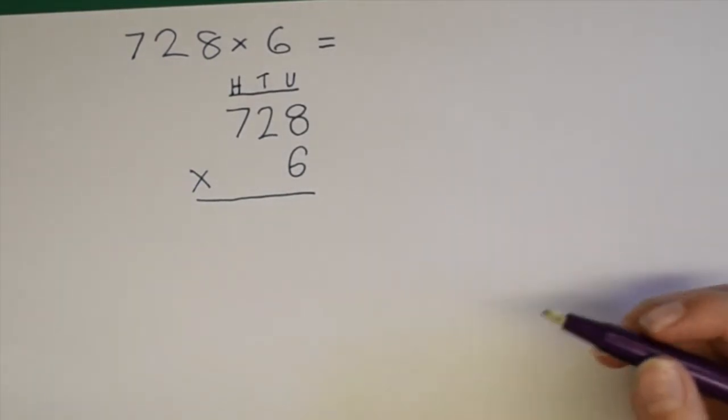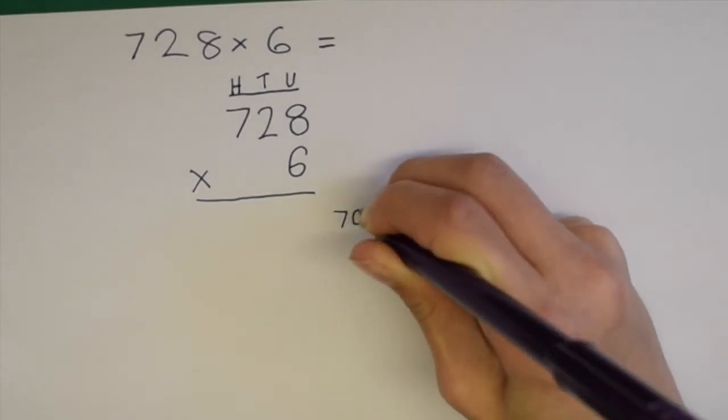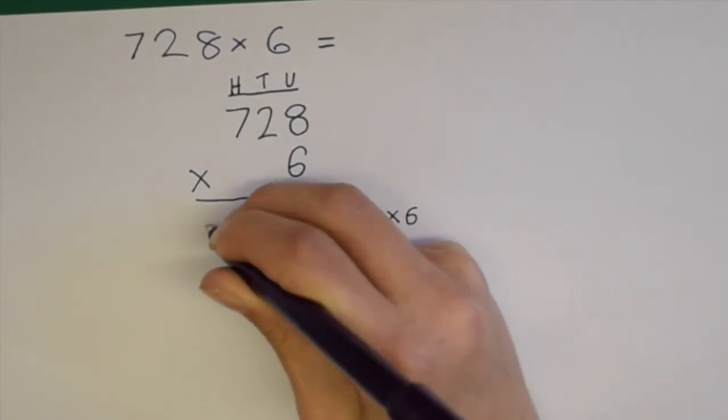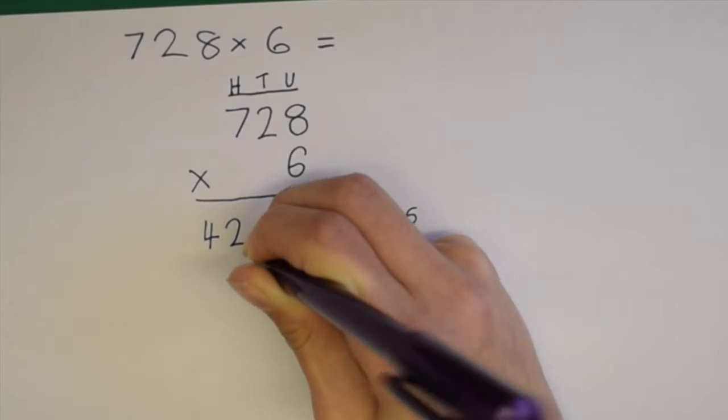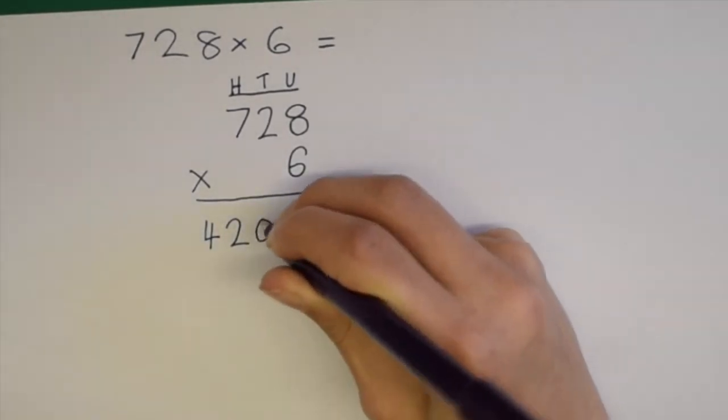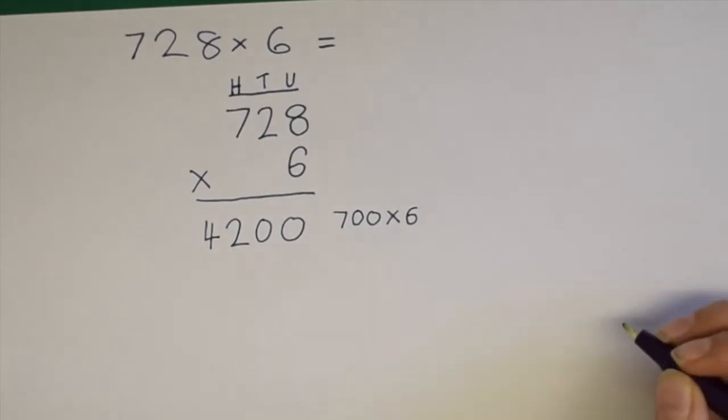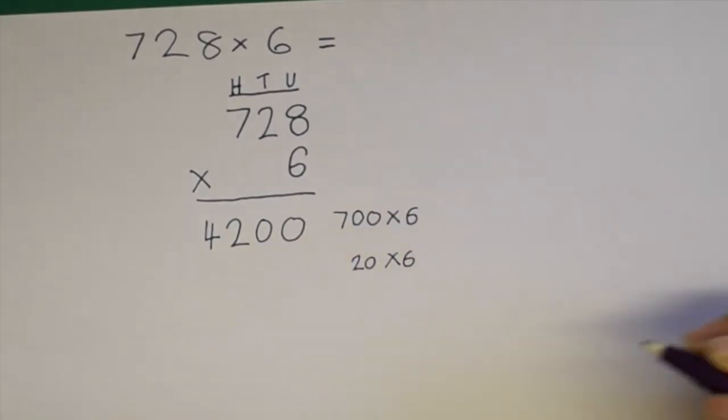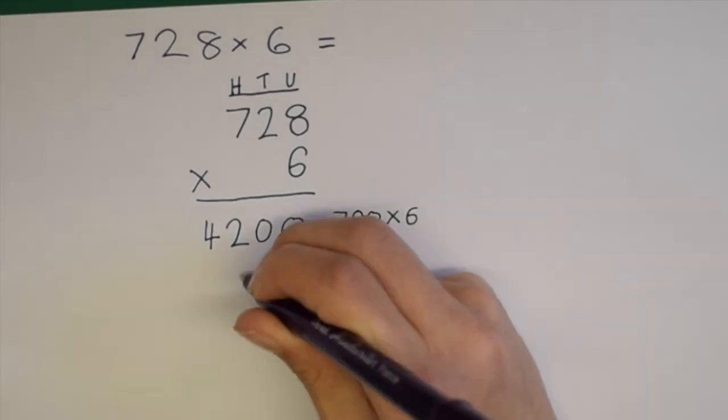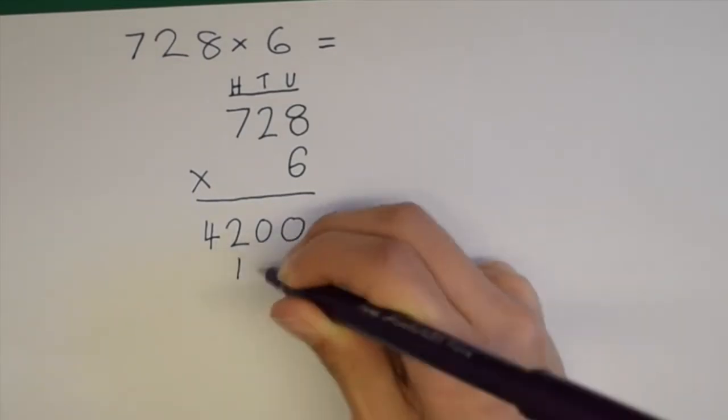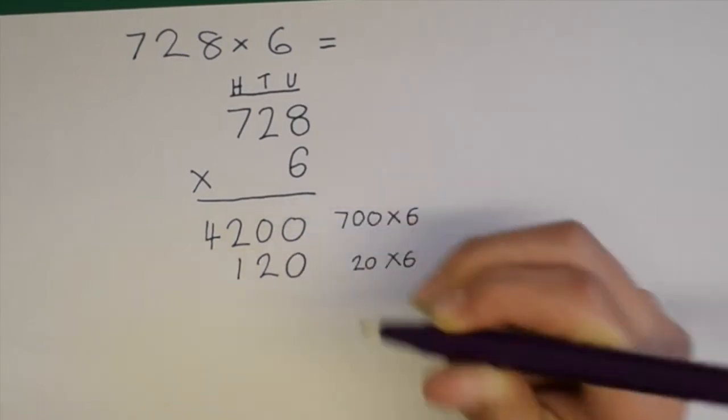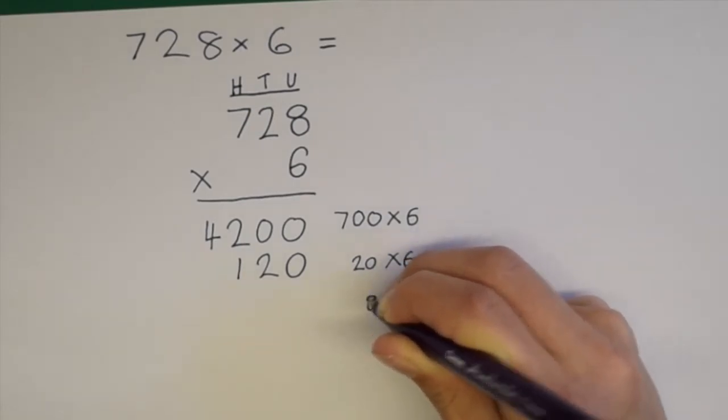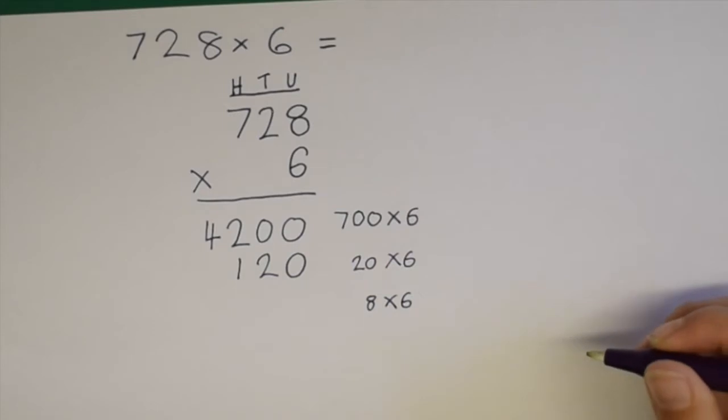Now we are going to start off by doing 700 times 6, which is 4200. Next we can do 20 times 6, which is 120. And after that we can do 8 times 6, which equals 48.